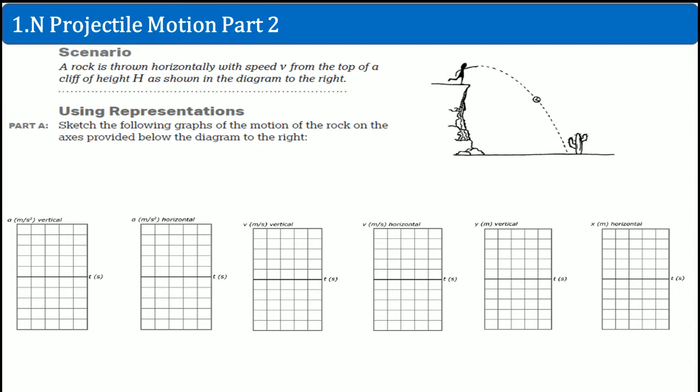Welcome. This is the AP Physics Workbook Solution, covering 1.n — projectile motion, part two. Here's the scenario: you're on a cliff. A rock is thrown horizontally with a speed v from the top of a cliff of height h, as shown in the diagram on the right. Sketch the following graph of the motion of the rock on the axis provided.